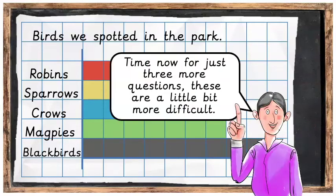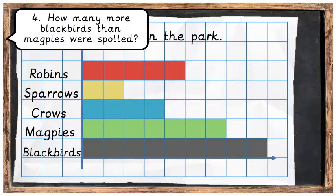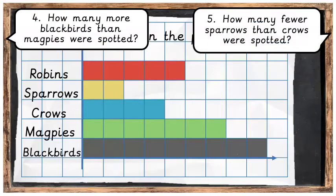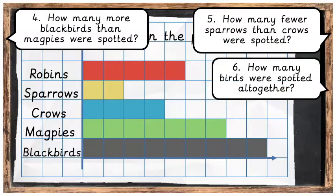Well done! Time now for just 3 more questions — these are a little bit more difficult. Question 4: how many more blackbirds than magpies were spotted? Question 5: how many fewer sparrows than crows were spotted? And question 6: how many birds were spotted all together? Press pause, see if you can answer these questions, and then press play when you are ready.